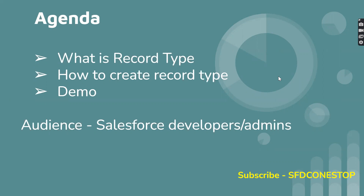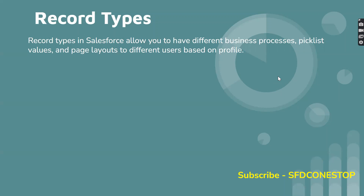Let us understand what is a record type in Salesforce. Record type allows you to associate different business processes and a subset of picklist values to different users based upon their profile. Basically, system admins can configure different record types as per our business need, and then we can associate different page layouts based upon the profile.